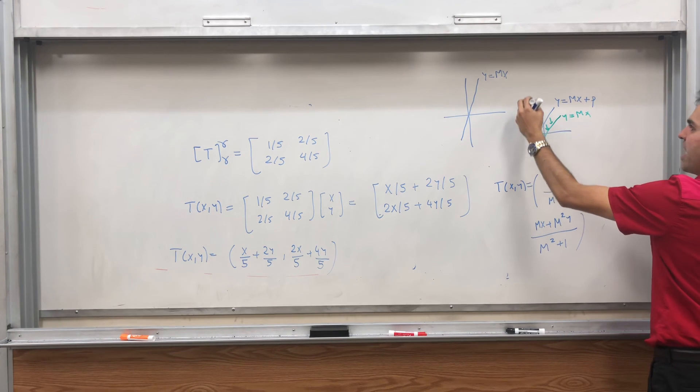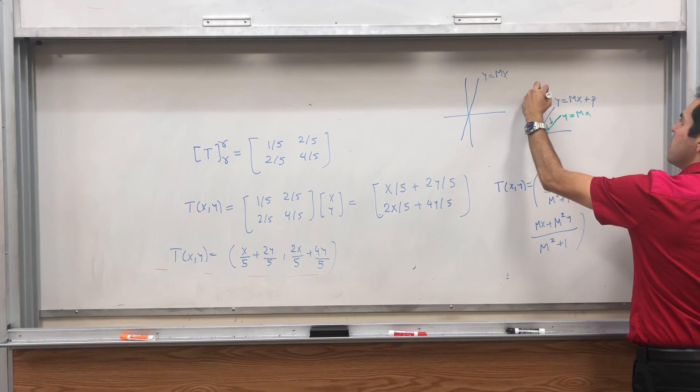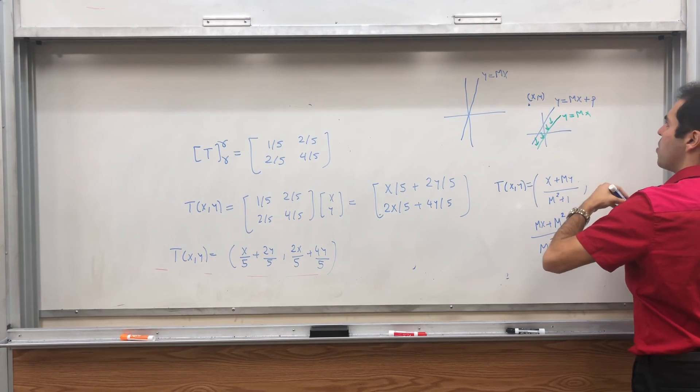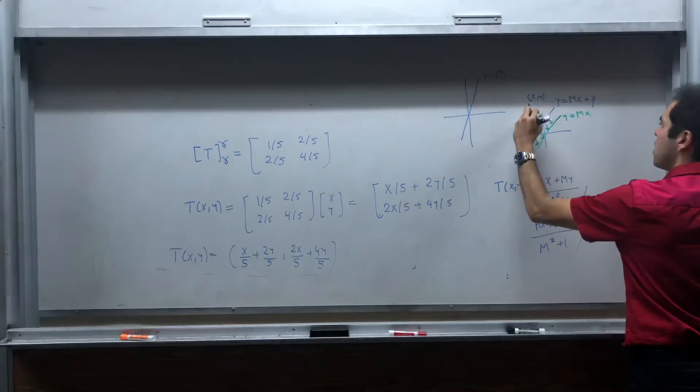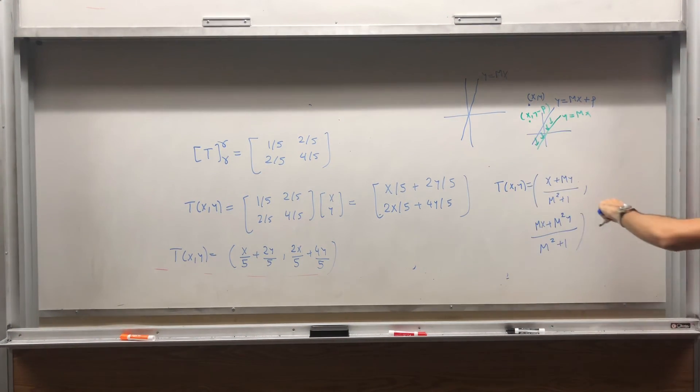So subtract p everywhere, and then project your new point. If this is x, y, you get x comma y minus p, I think it's time to stop, and then you reflect this, you get this formula, and then you add p back. So I think it's just the same formula, but with y plus p instead of y.